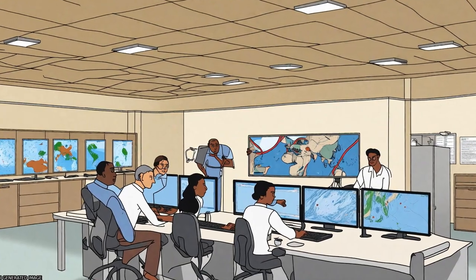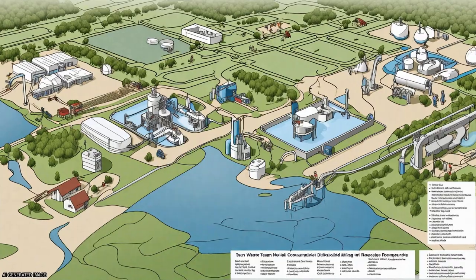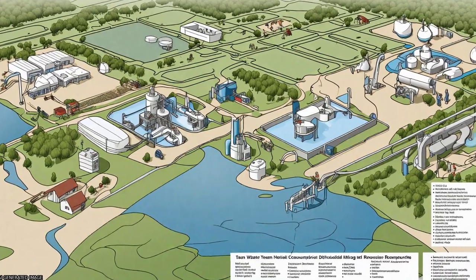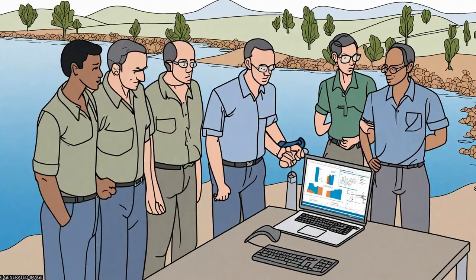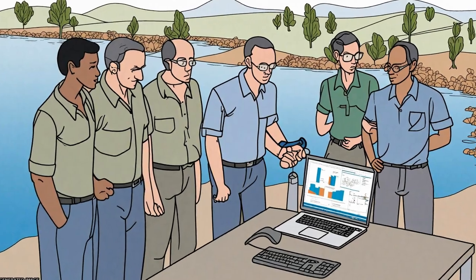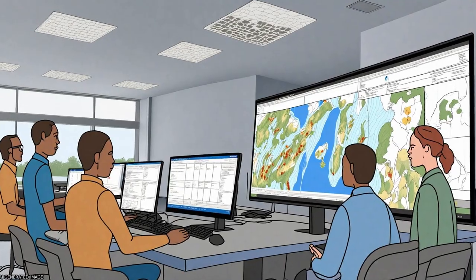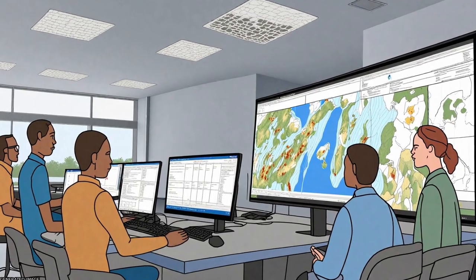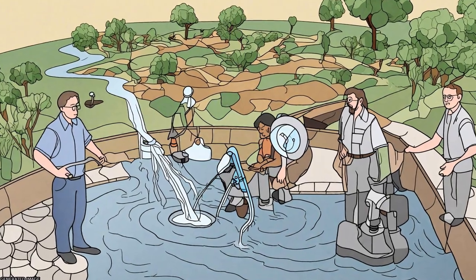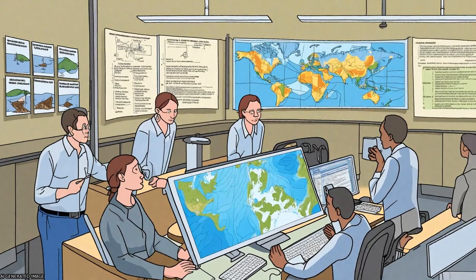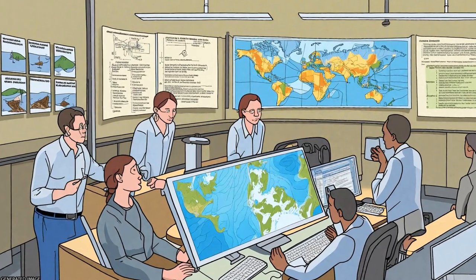They take into account the mutual feedback between supply and demand, implement a new water allocation scheme, and include a new irrigation scheme that works dynamically with surface and soil water balance.